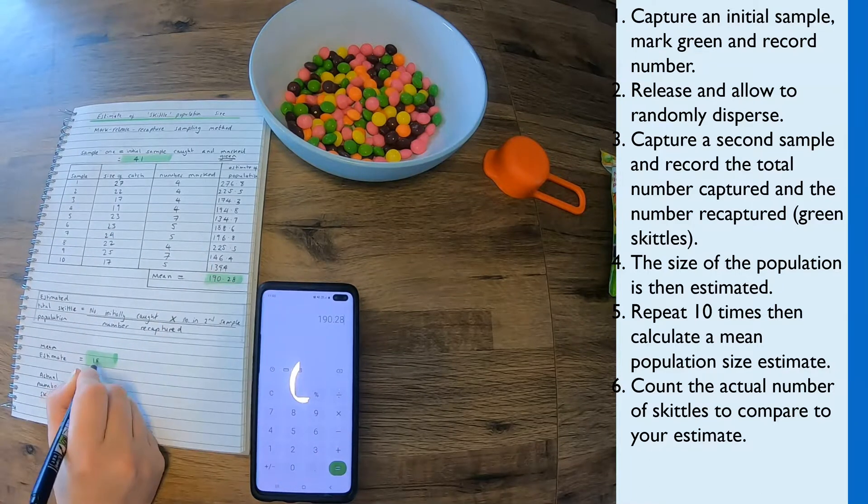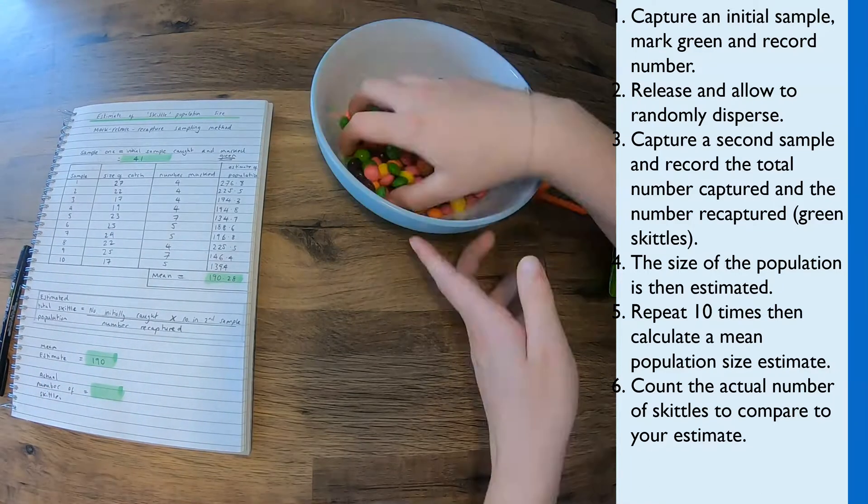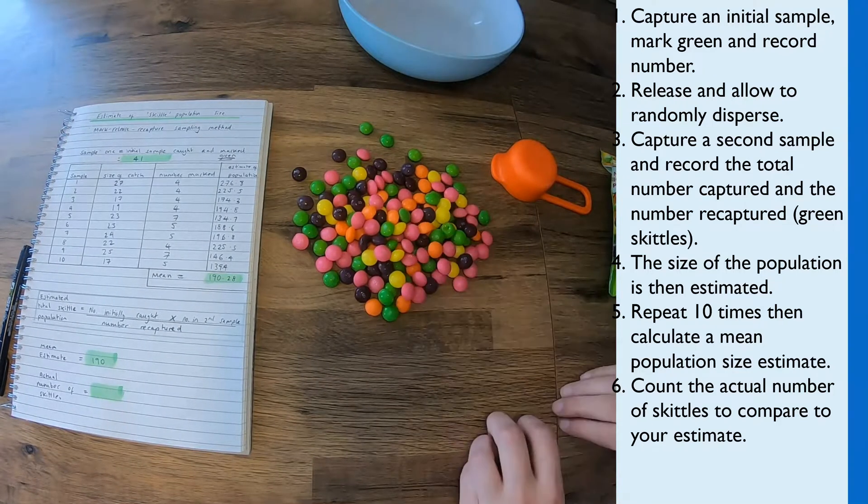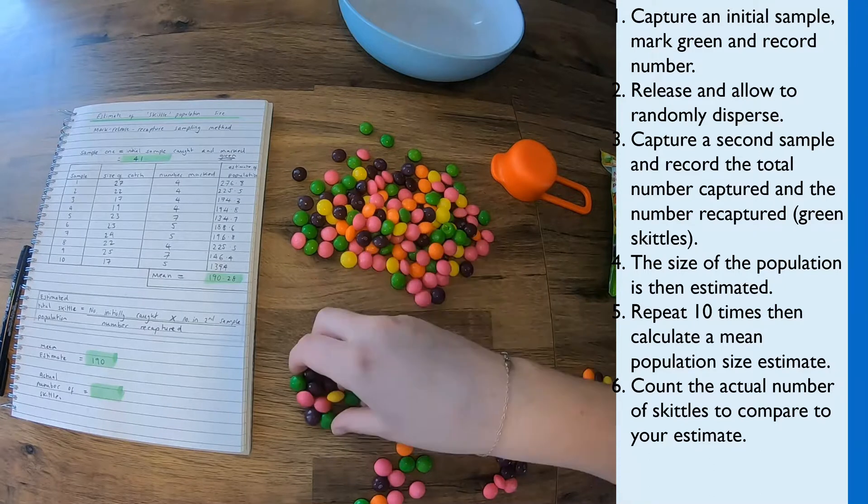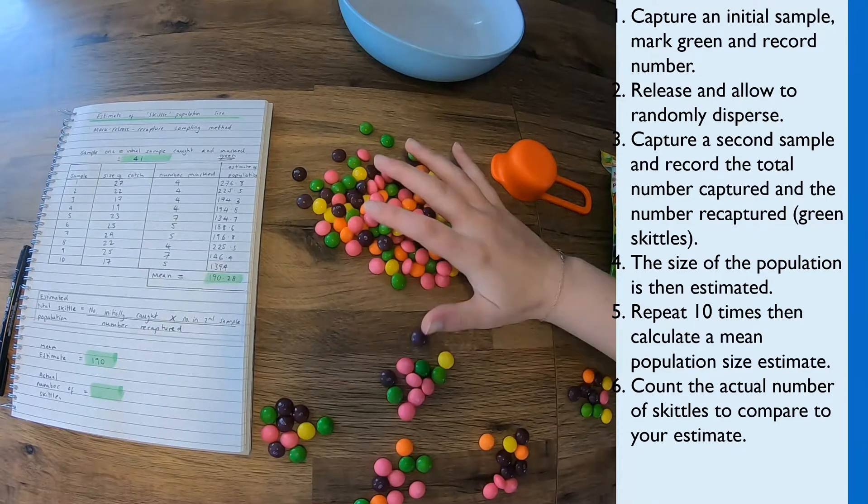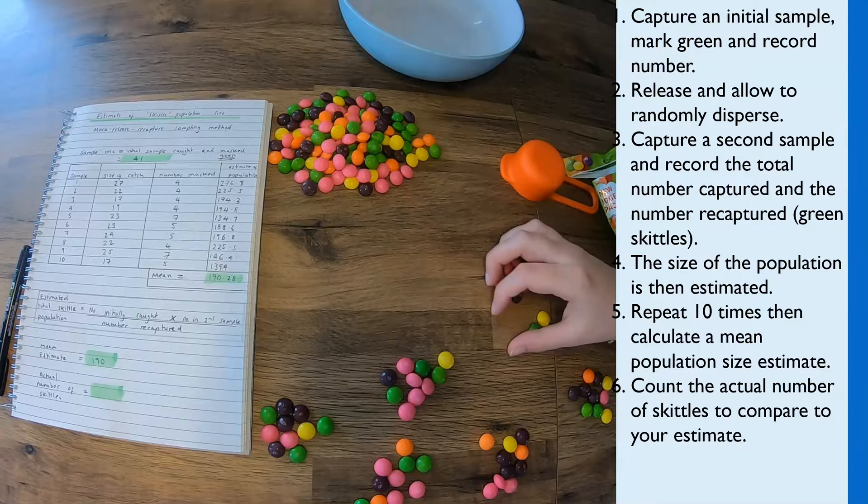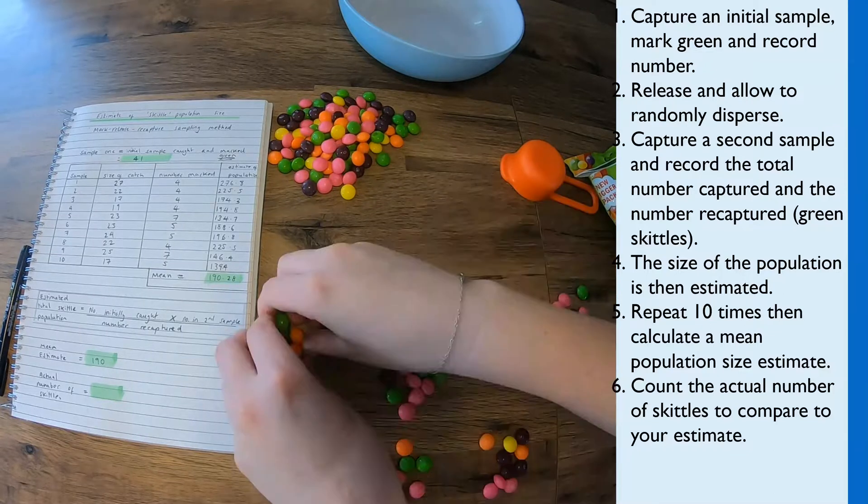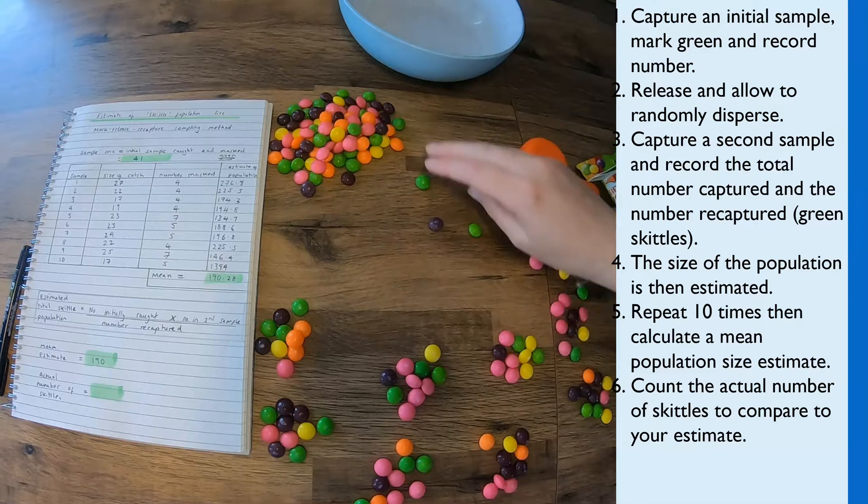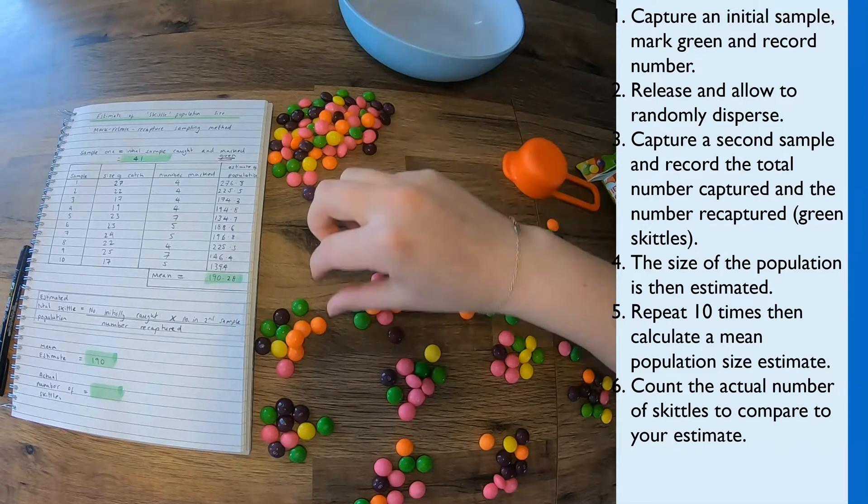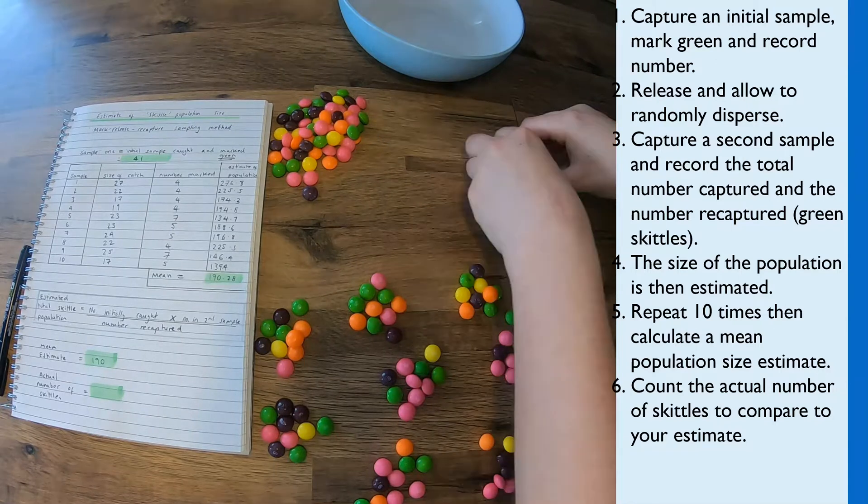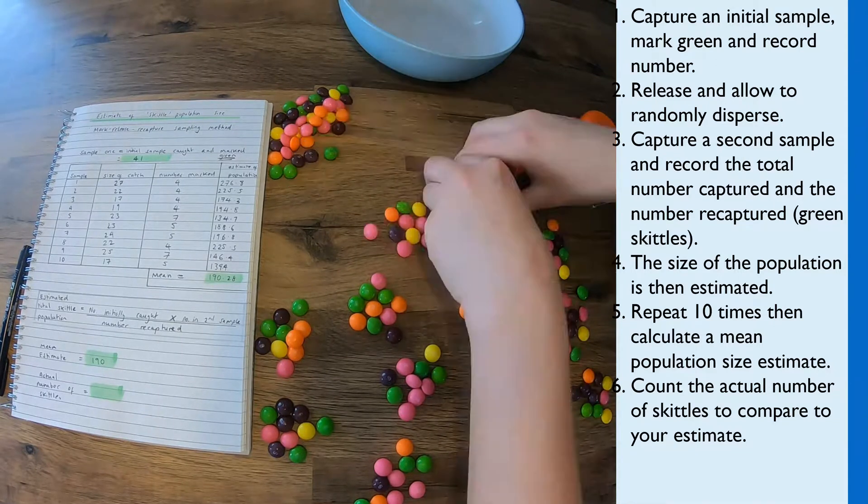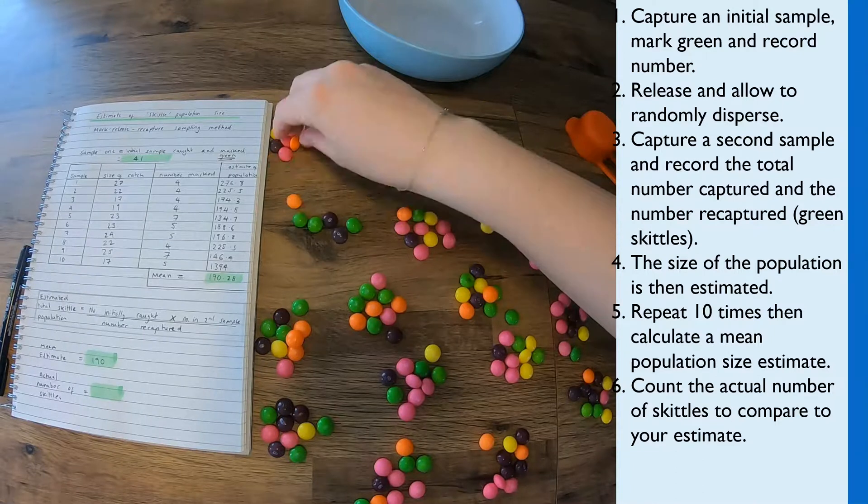And we can see it's 190, rounding down. So the final step then is I'm actually counting here every single Skittle to see what was the actual population size of this Skittle population, so how many Skittles do I have in total. So I can then compare the actual number to the estimate that the mark-release-recapture method and calculation provided me, just to demonstrate to you how accurate it is or how accurate it isn't.